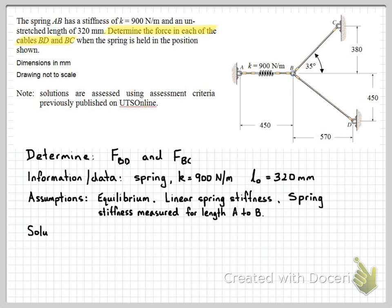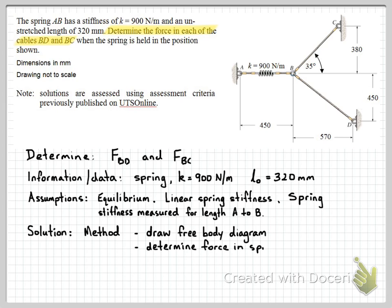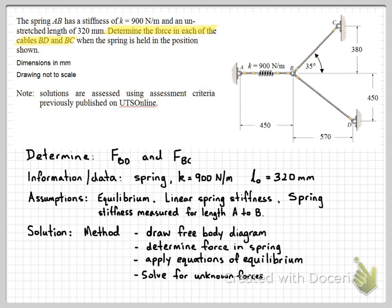The next step is to consider our solution method. We have an equilibrium problem, so we'll first draw a free body diagram. We need to draw a free body diagram of the part of the system in which the unknown forces are acting. Then we'll determine the force in the spring, since that's essentially the loading into this system. We'll then apply our equations of equilibrium, solve for the unknown forces, and finally check our answers and calculations.